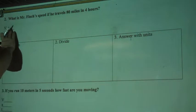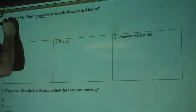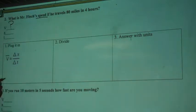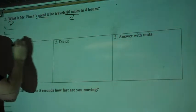We're going to find our values for our variables first. So V, it says what is Mr. Finch's speed? We don't know the speed, so for velocity I'm going to put a question mark. If he travels 80 miles, so 80 miles is a distance.